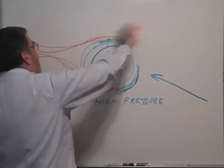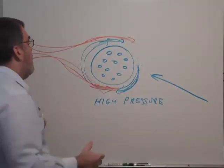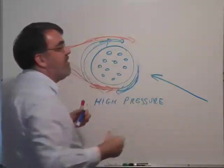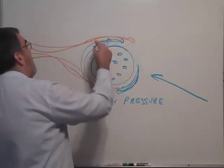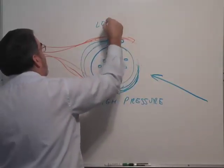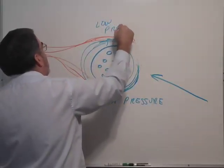the air flows over it very quickly and the air is not bunching up. It's not colliding. It's actually zipping right over the ball. And so there are fewer air molecules on top. It creates a low pressure situation.